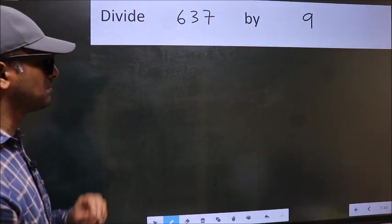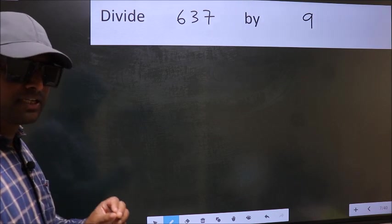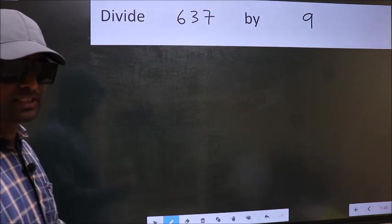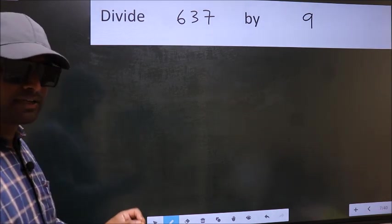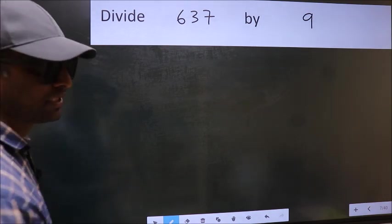Divide 637 by 9. While doing this division, many make a mistake. What is the mistake that they make? I will let you know. But before that, we should frame it in this way.